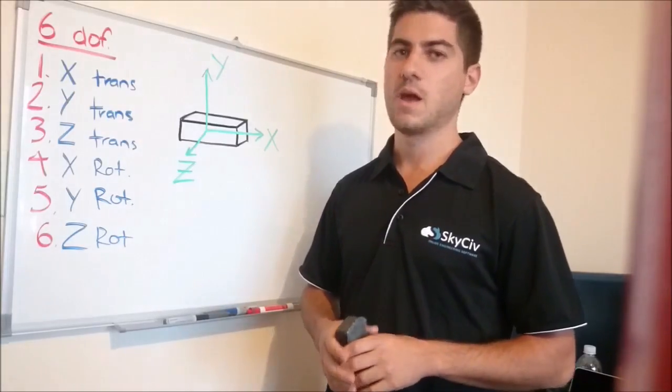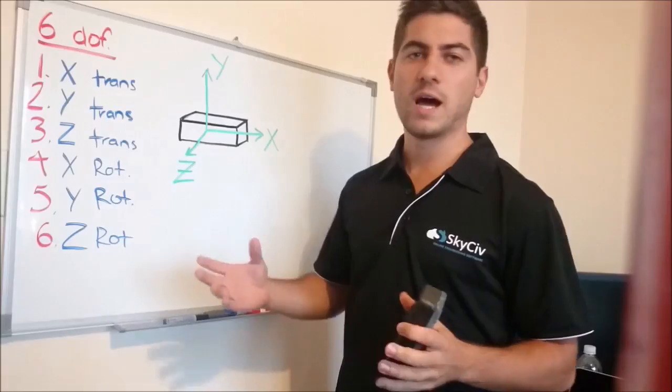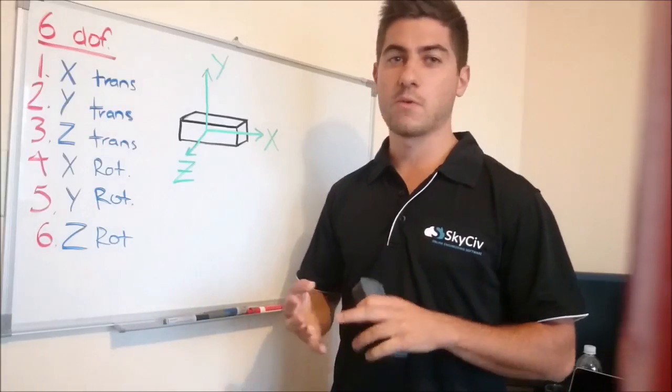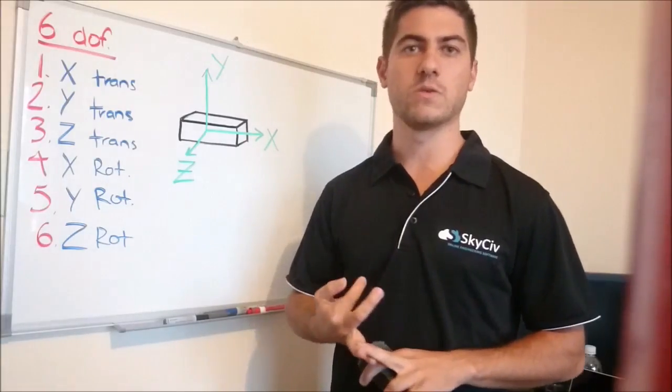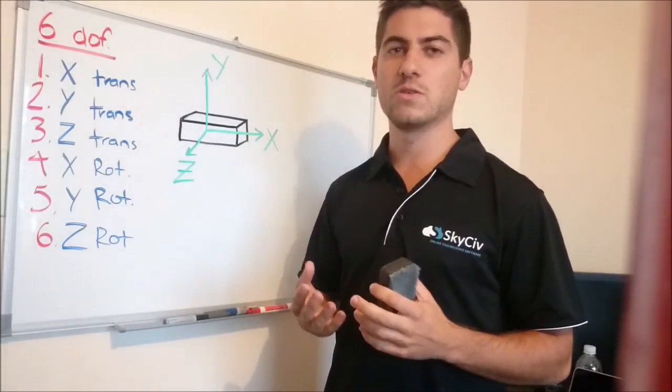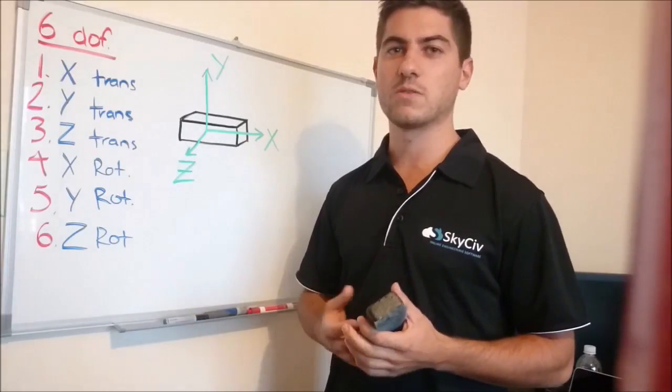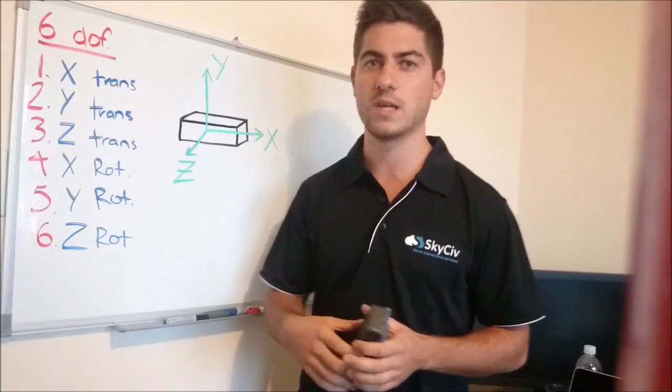Today we're doing 6 degrees of freedom, which is the degrees of freedom of any object in 3D space. They're a really important part of supports or connectivity when you're doing structural analysis. Often they're misunderstood, it's quite a difficult thing to grasp at first, but once you completely understand it, it will take you through the rest of your engineering career and studies.